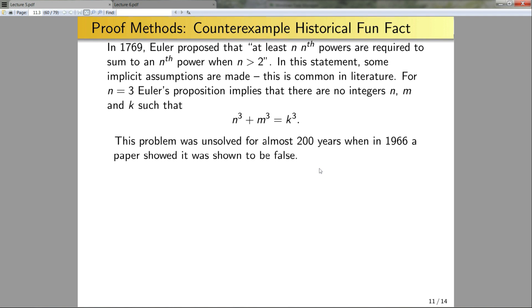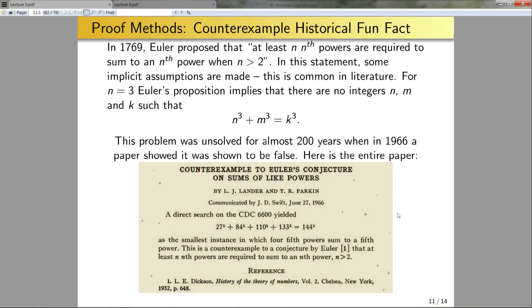Okay, so this problem was unsolved for almost 200 years. When in 1966, a paper showed that this statement was in fact false. So now, 200-year-old unsolved problem. You would think that the people who showed that this was false would have some new mathematics or some deep philosophical idea behind the sum of nth powers. Well, here's the entire paper. Counter examples to Euler's conjecture. A direct search on CDC 6600, which was one of the most powerful supercomputers at the time, yielded that this equality holds. In this case, they're examining the n equals 5 case. So for Euler's proposition to hold, you would need to have five integers on the left-hand side. They clearly have four. This is the smallest incidence in which four fifth powers sum to a fifth power. It's a counter example to the conjecture by Euler, and we're done. So that's kind of a mic drop moment there, but this just goes to show that counter example proofs can be extremely short.